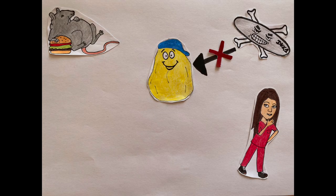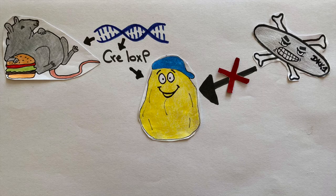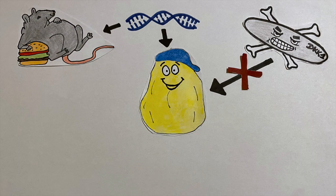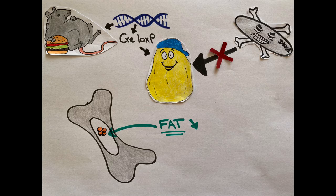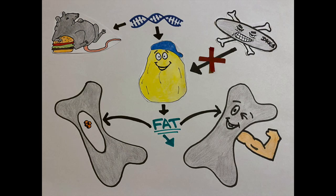Now, what about DKK1 from adipocytes? In a mouse model, we used the Cre-loxP system to inhibit DKK1 from adipocytes. The good news is that we observed a reduction in bone fat accumulation in mice on a high fat diet. Additionally, these mice showed an improvement in bone mass during high fat diet compared to control mice. Thus, the expansion of bone marrow fat during obesity may contribute to bone loss via the production of DKK1.